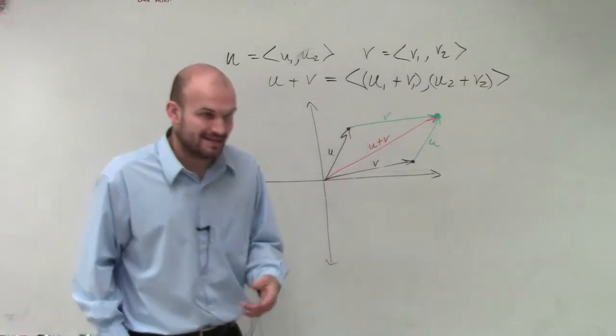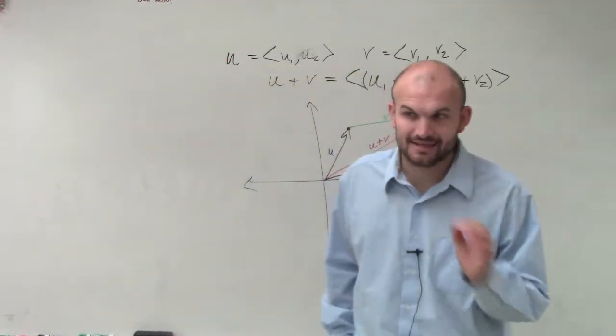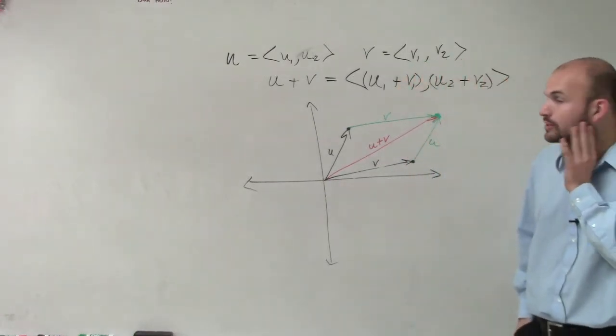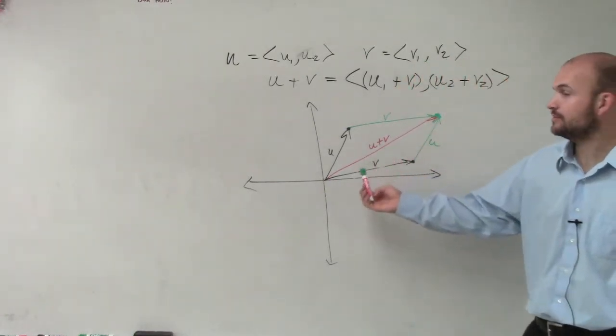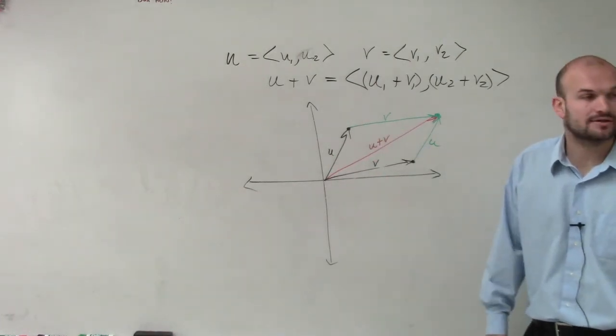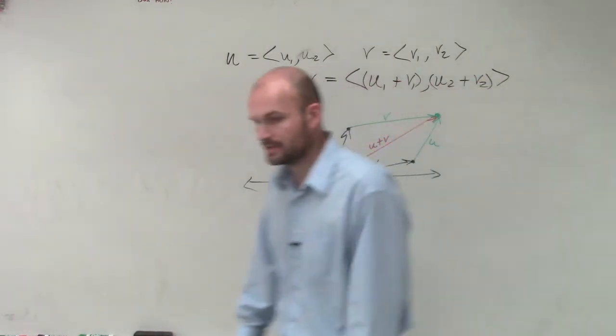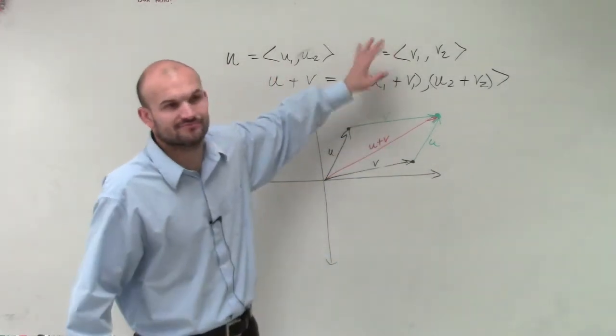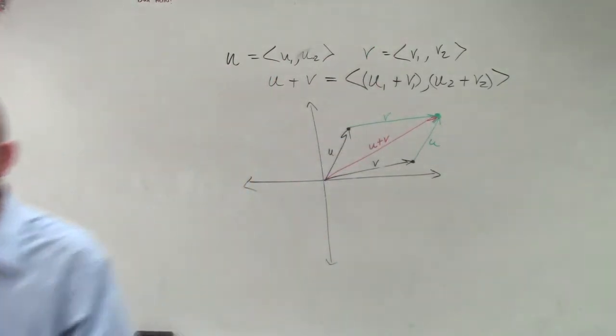So just remember when adding, when adding, all right, what we're going to do is we're just going to take one and then just transpose it to the end of the other vector. Okay? That's it. Now, algebraically, it's pretty basic, right? But graphically, sometimes it can get a little confused.